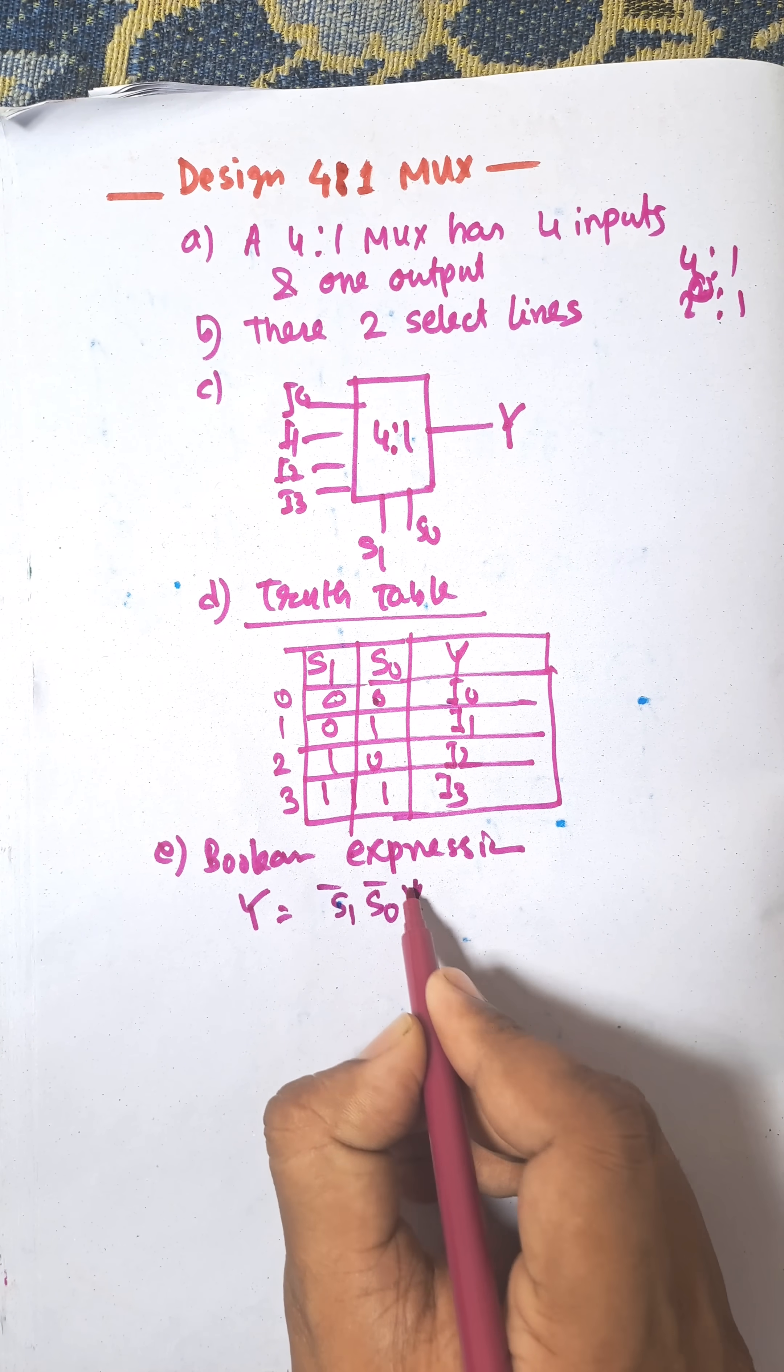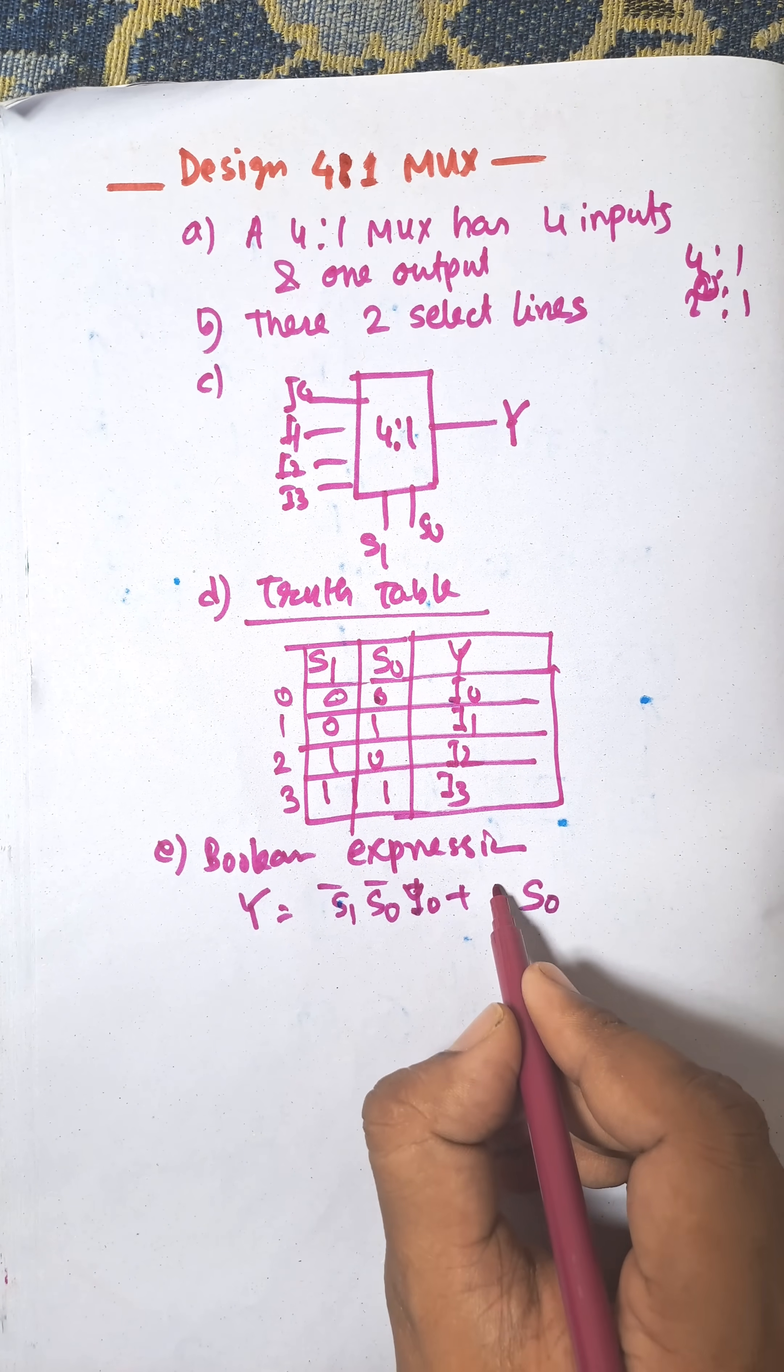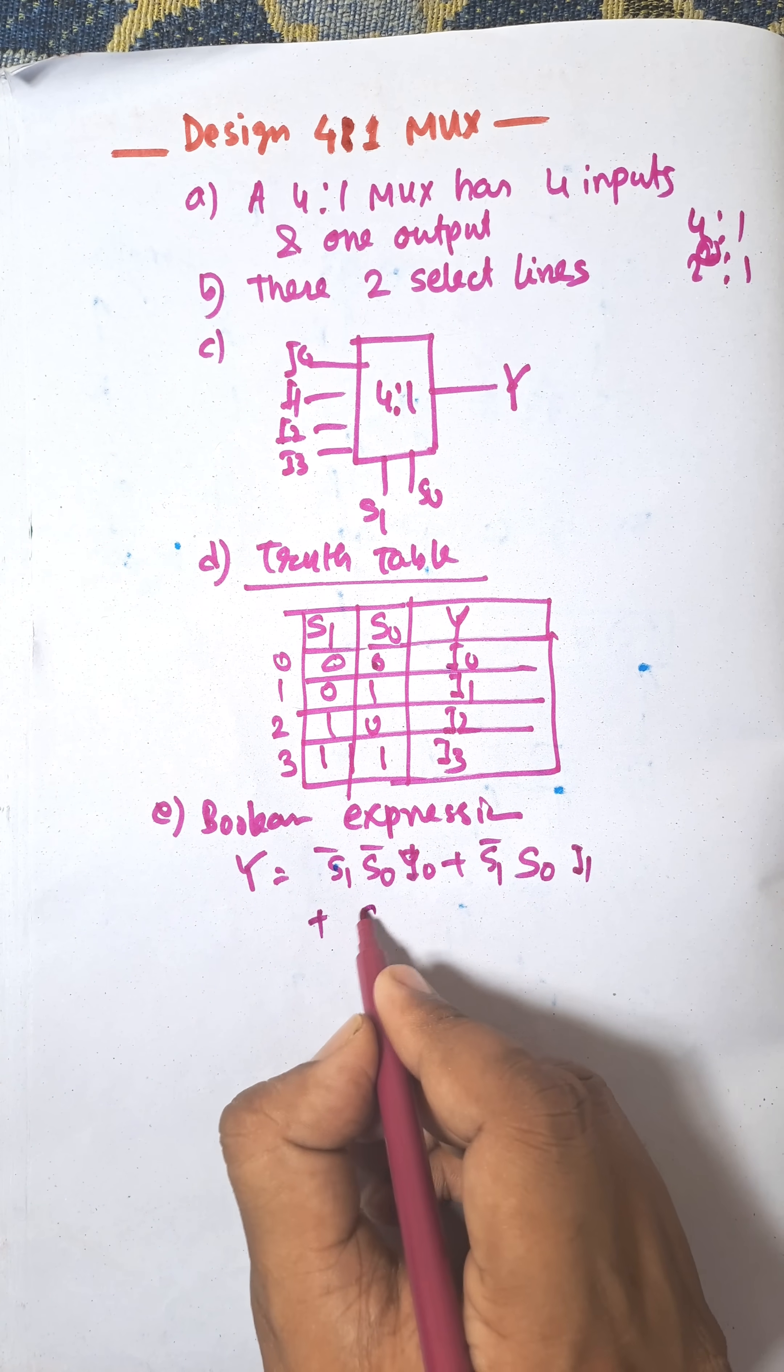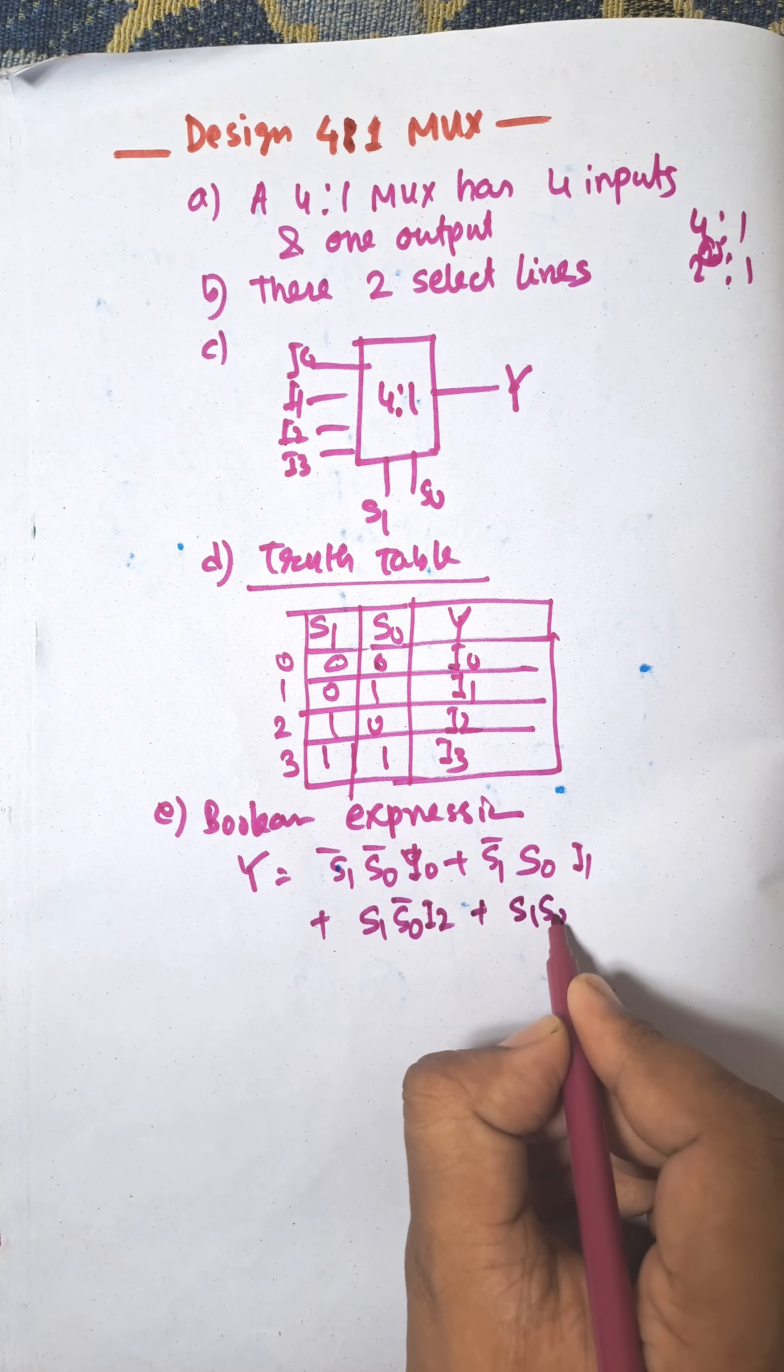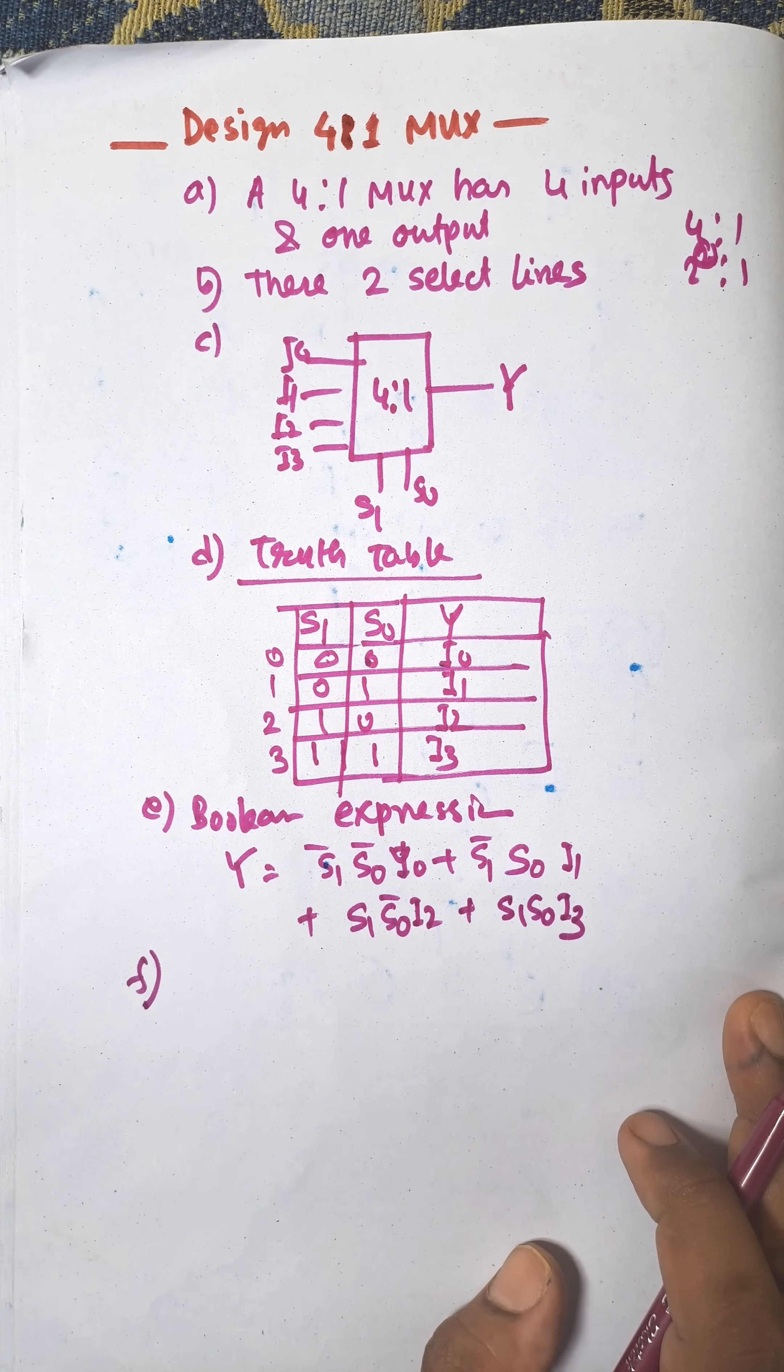Y equals S1 bar S0 bar I0 plus S1 bar S0 I1 plus S1 S0 bar I2 plus S1 S0 I3. Now the circuit diagram is the last step of this design.